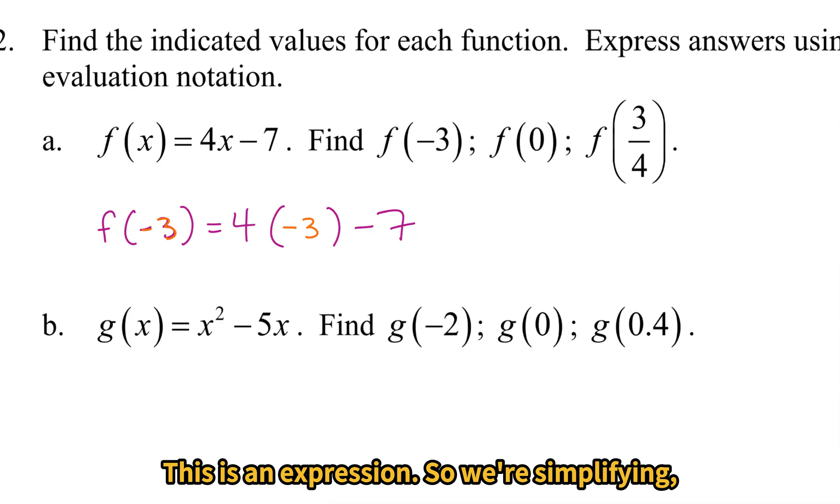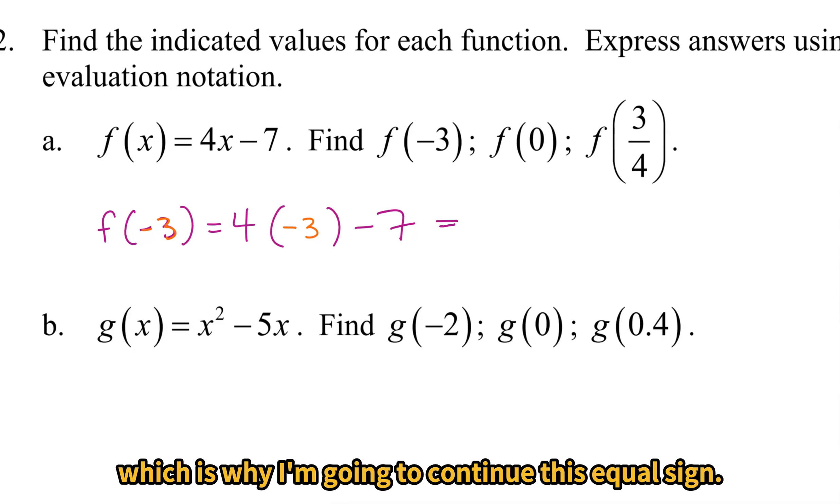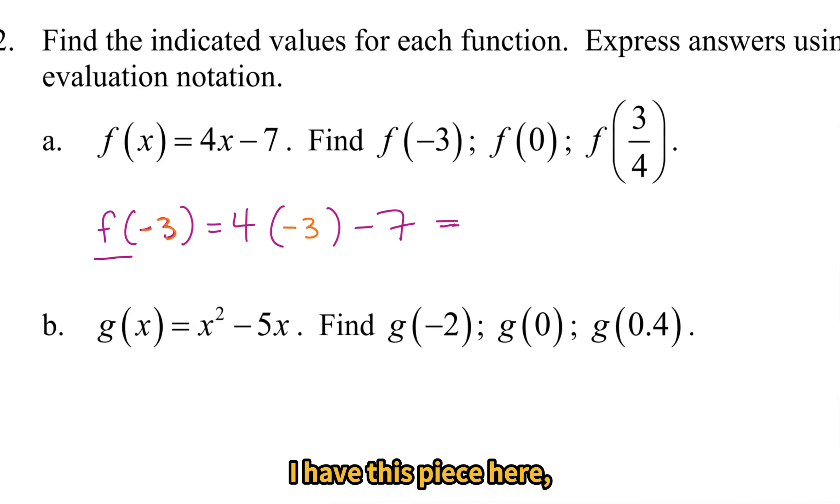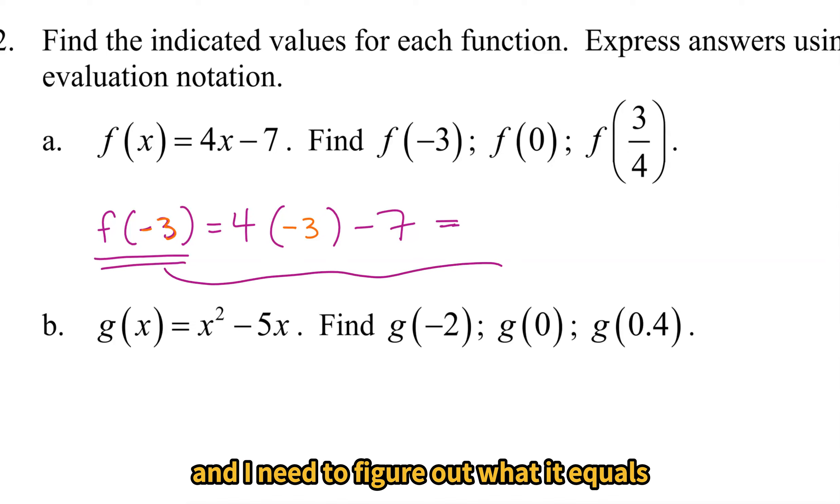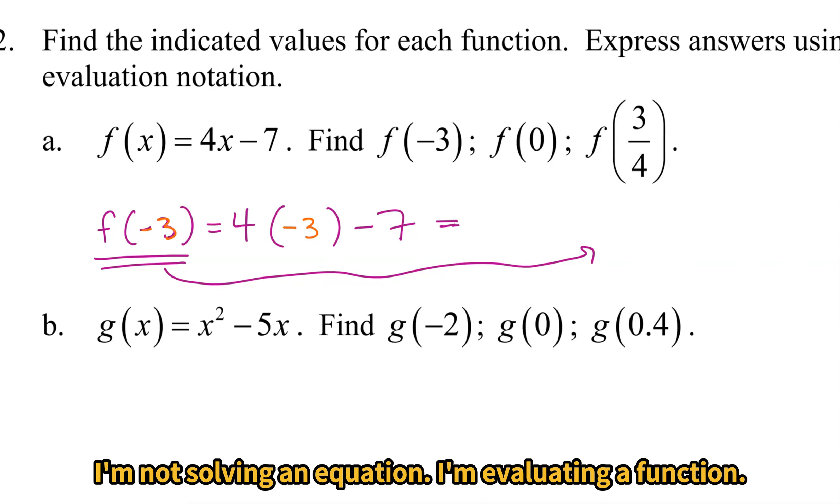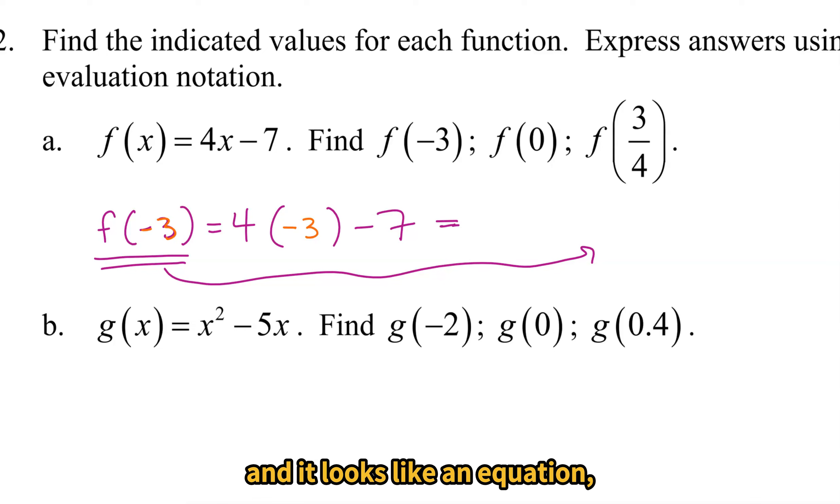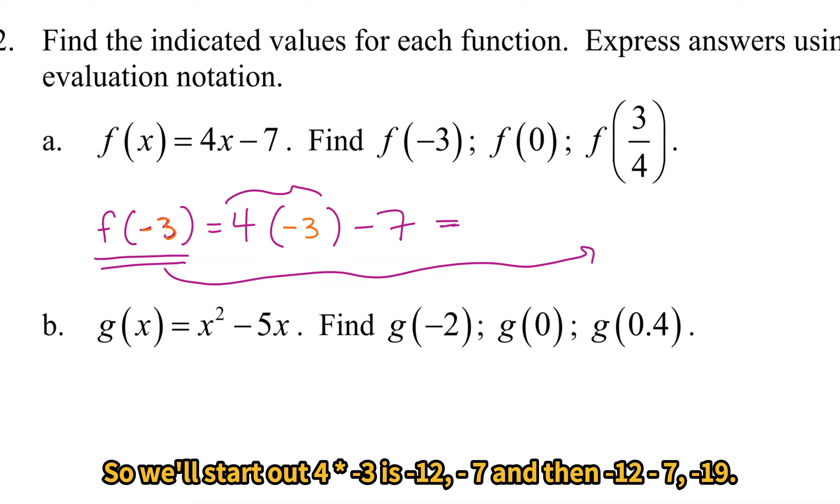And now we can multiply it out. This is an expression, so we're simplifying, which is why I'm going to continue this equal sign. I have this piece here, and I need to figure out what it equals on down the road. I'm not solving an equation, I'm evaluating a function. So even though there are equal signs here and it looks like an equation, do not divide by -3. We're not multiplying, we're evaluating. So we'll start out 4 times -3 is -12, minus 7, and then -12 - 7 is -19.